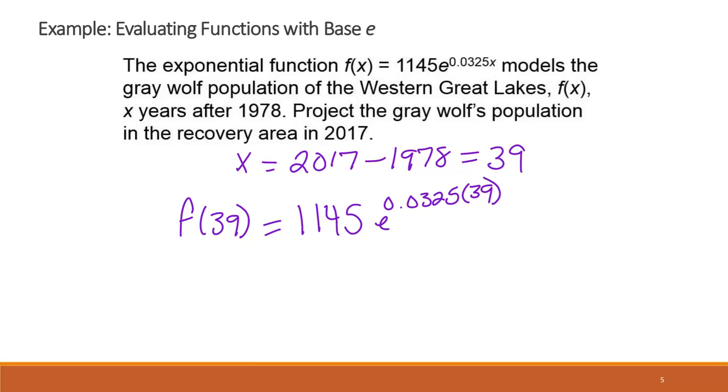And so if we're going to round up, right, because we can't have a portion of a wolf. So we're going to round up here and we're going to get 4,067.